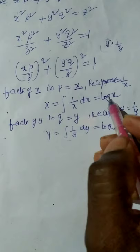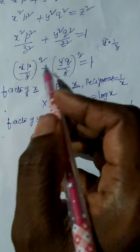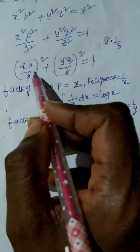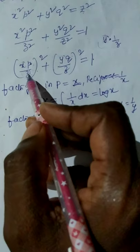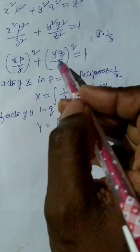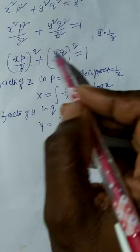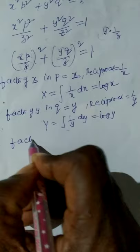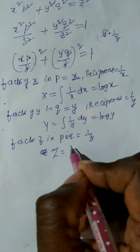We merge small z in both p and q. It is important to note that the association of z with small p must be the same as with small q. In the quotient of p, the factor of z is 1/z, and similarly 1/z is the factor for both p and q. So we take capital Z = ∫(1/z)dz = log z.